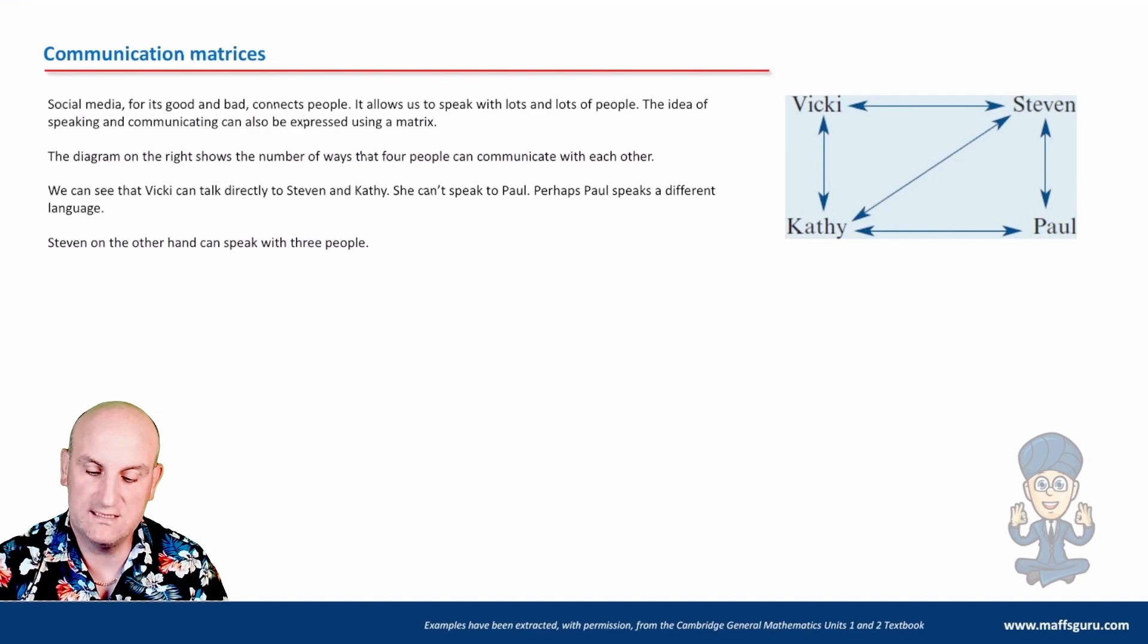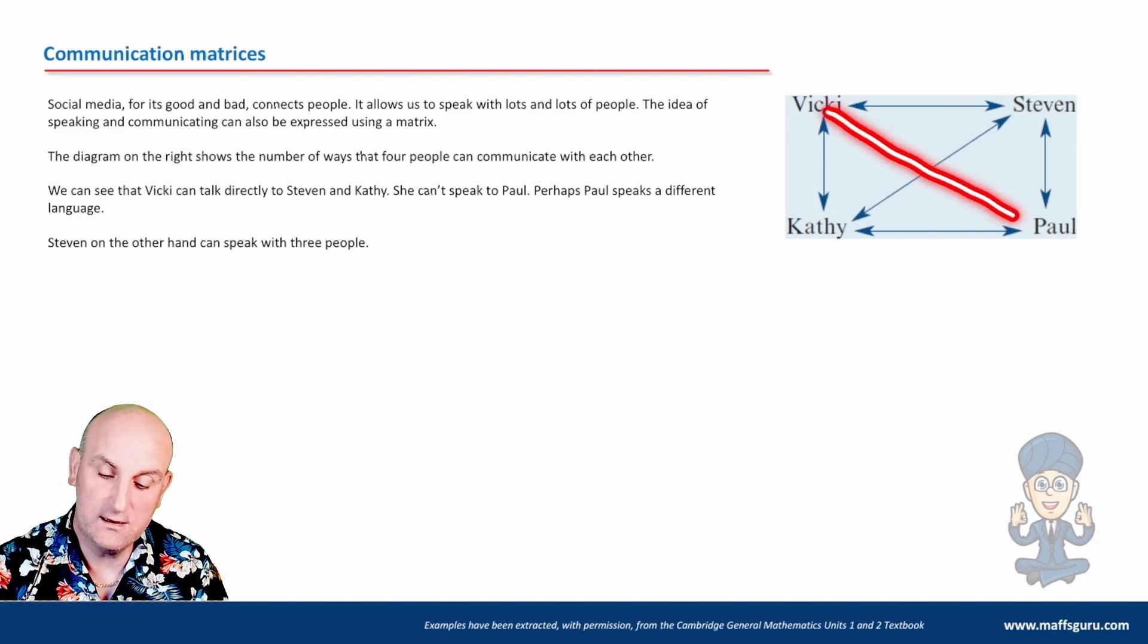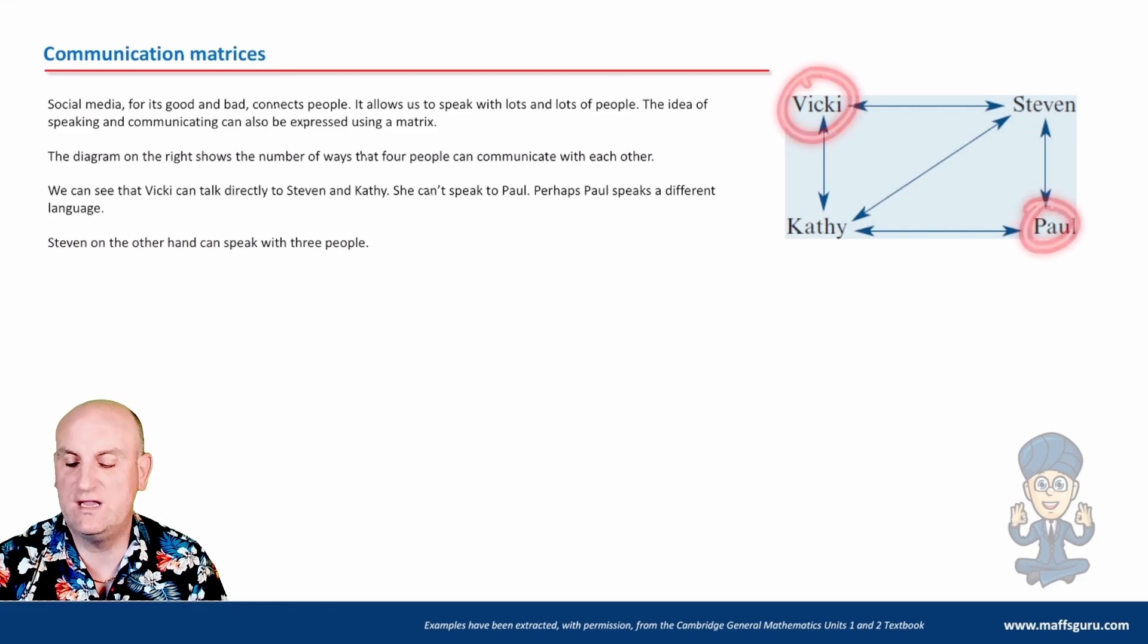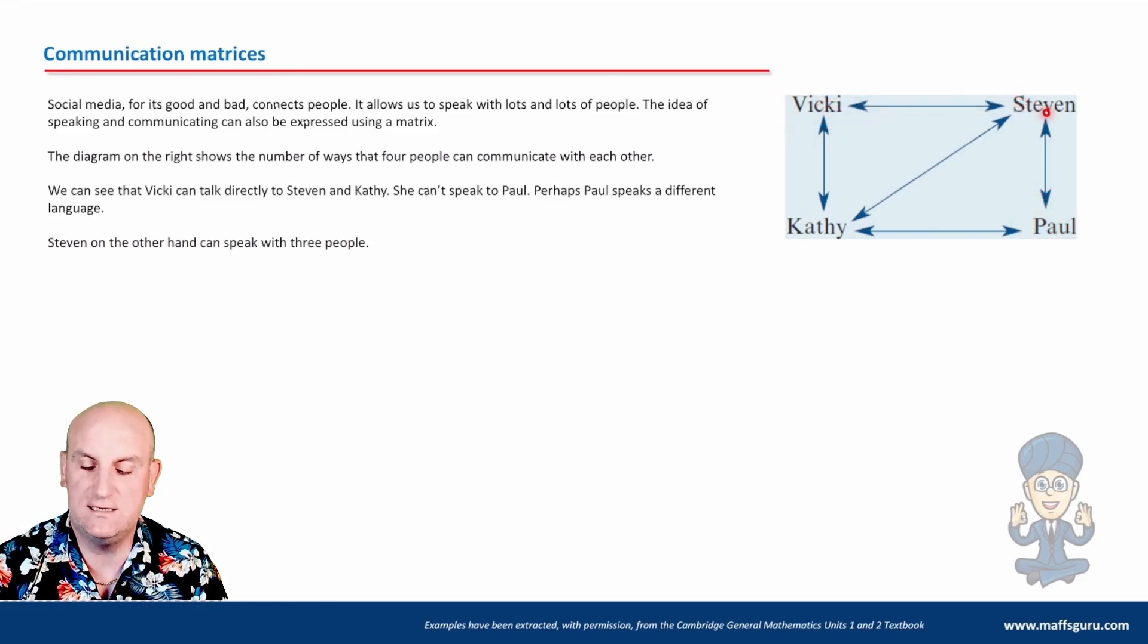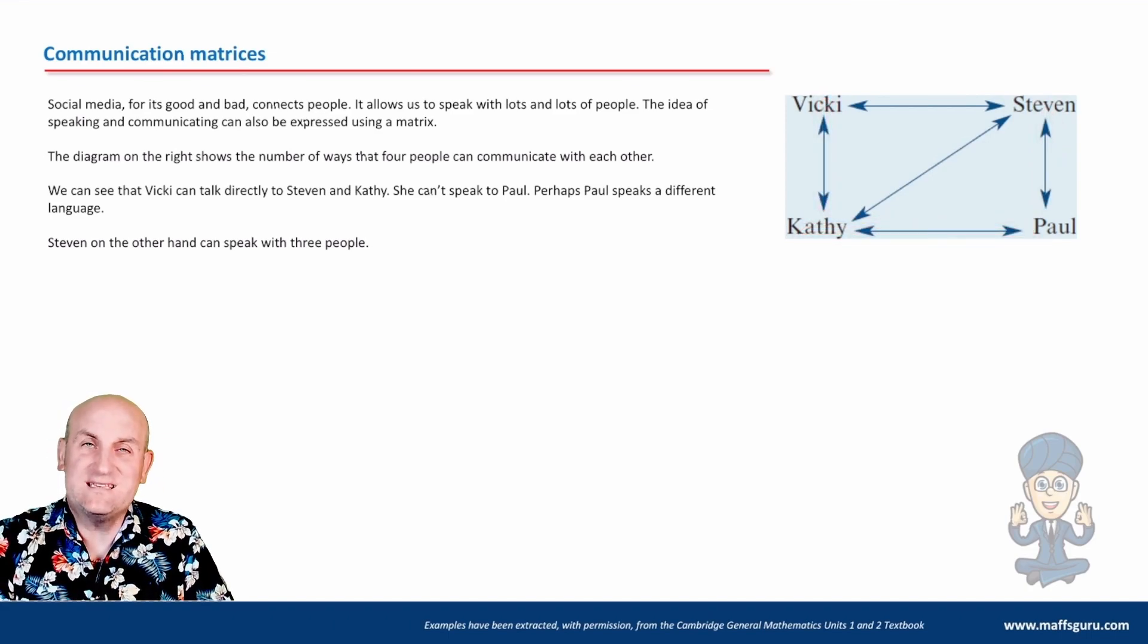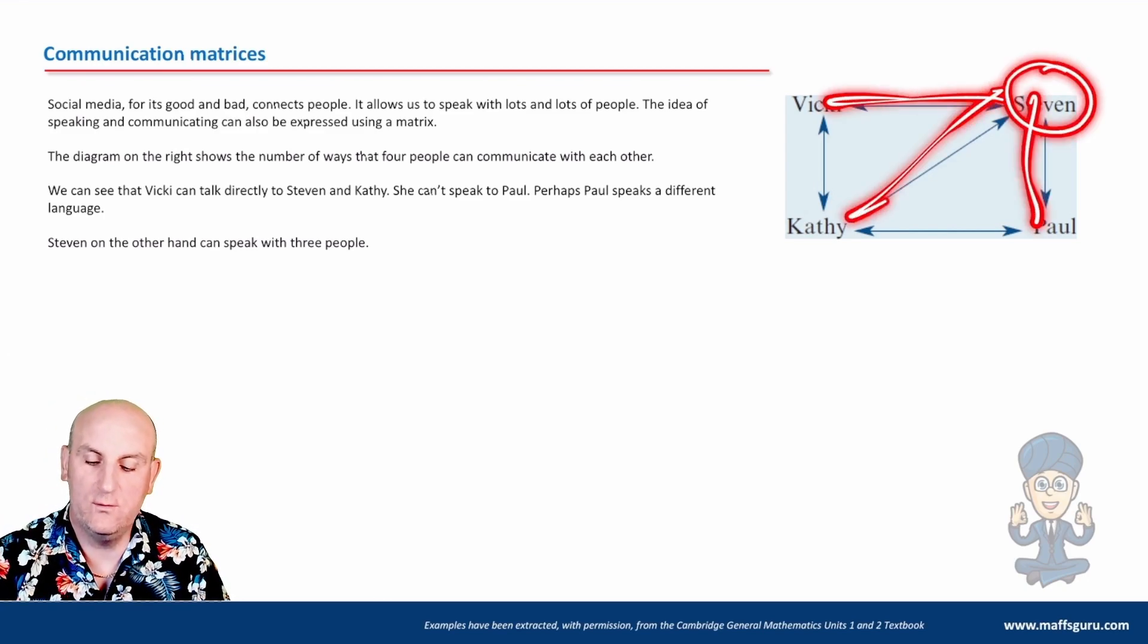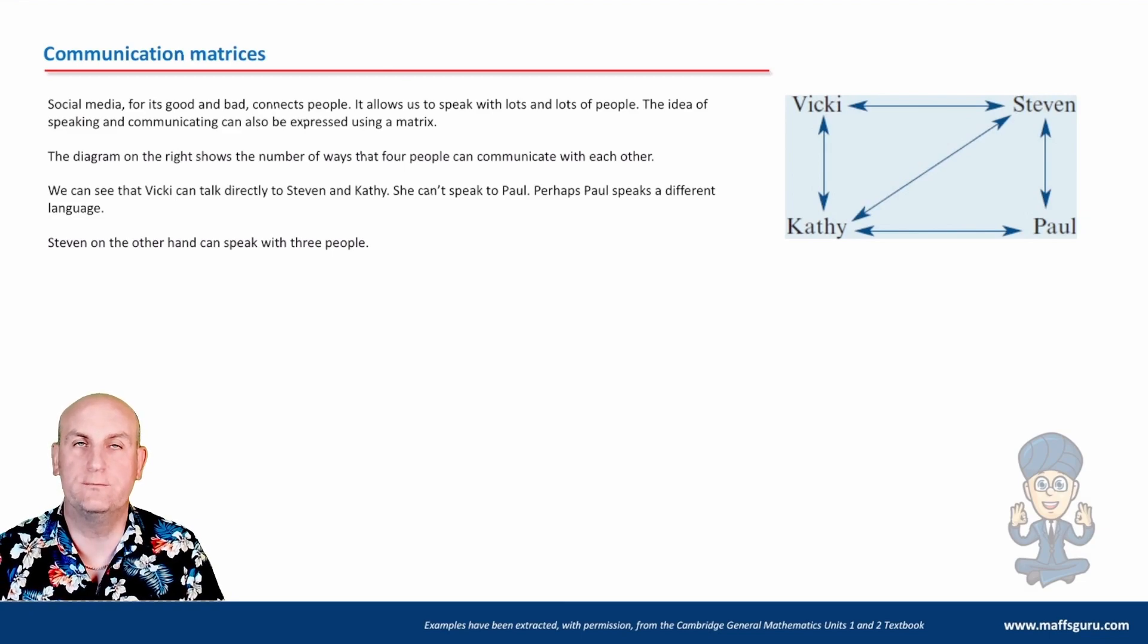We can see that Kathy and Paul can talk together. Stephen and Paul can talk together. Kathy and Stephen can talk together. But Vicky can't actually talk to Paul. So if Vicky wanted to talk to Paul, she'd actually have to send a message through Stephen. Or she could send it through Kathy. So understanding how this is, is really important. But we noticed that Stephen is the only one that can talk to all three people.